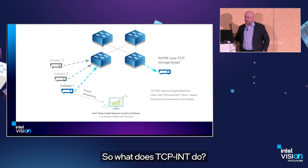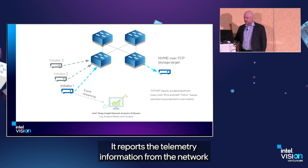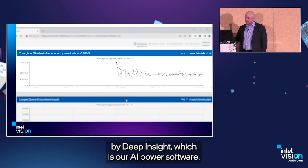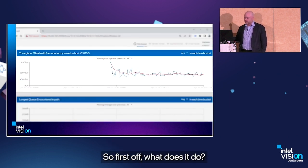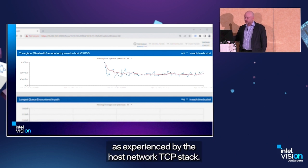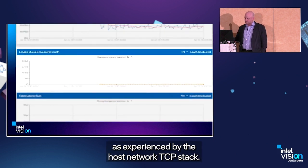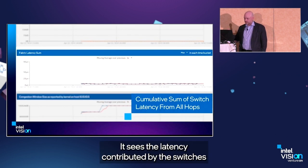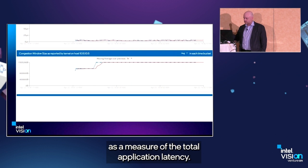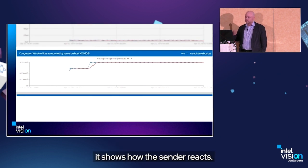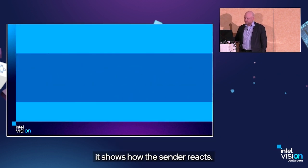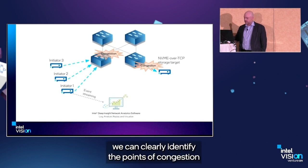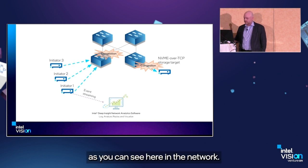TCP INT reports telemetry information for the network and collects and analyzes it in real time using Deep Insight, our AI-powered software. It measures throughput as experienced by the host network TCP stack, exactly quantifies queue occupancy in the switches, and sees the latency contributed by the switches as a measure of total application latency. When congestion occurs, it shows how the sender reacts. As we increase the number of initiators, we can clearly identify the points of congestion in the network.